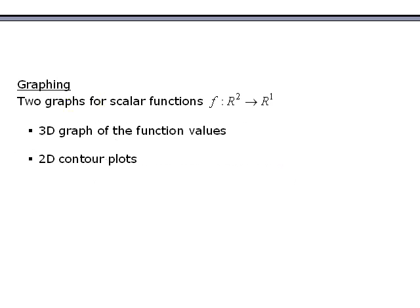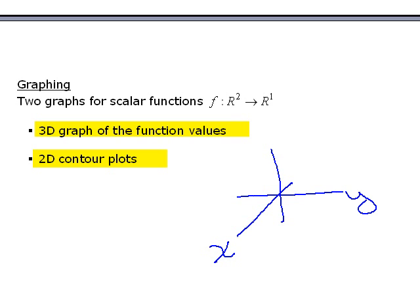There are two kinds of graphs that are associated with these scalar functions. One are just the values of a function, a graph showing the function values themselves. And the other are the contour plots. If you're mapping R2 into R1, then the function values are part of a three-dimensional graph. So here would be your x and y. And here is the value of your function, also call it z. Your function might have some kind of three-dimensional form here. I'm going to show you one like that in a minute. And that's the value of the function.